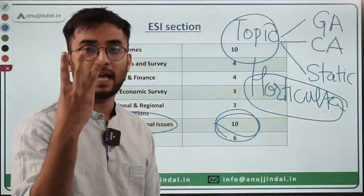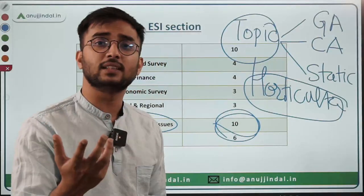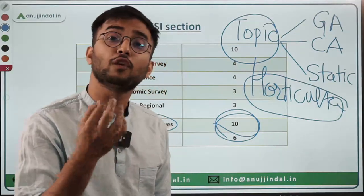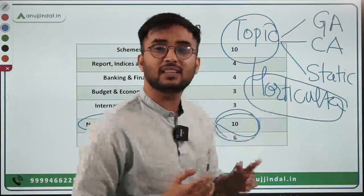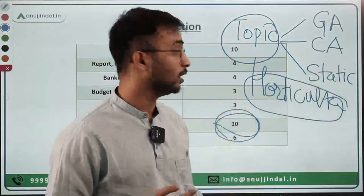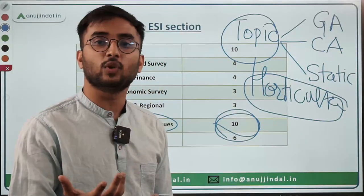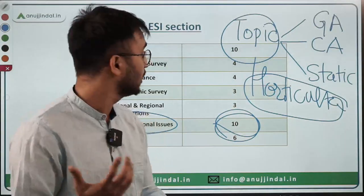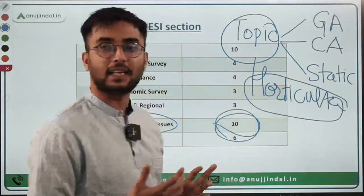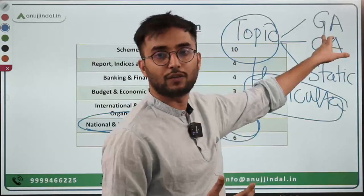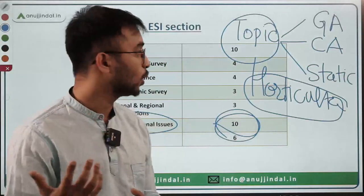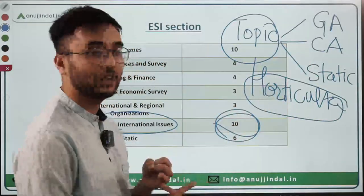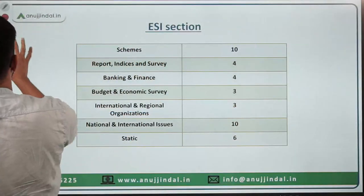When studying any topic in ARD or ESI, split it into three angles. First, General Awareness — for example, 'pomology is the study of fruits' is a general awareness question. Second, Static ARD — for example, the Quincunx system question is pure static. Third, Current Affairs — such as agricultural or rural development schemes. For any topic you study, always see it from these three angles: general awareness, current affairs, and static.